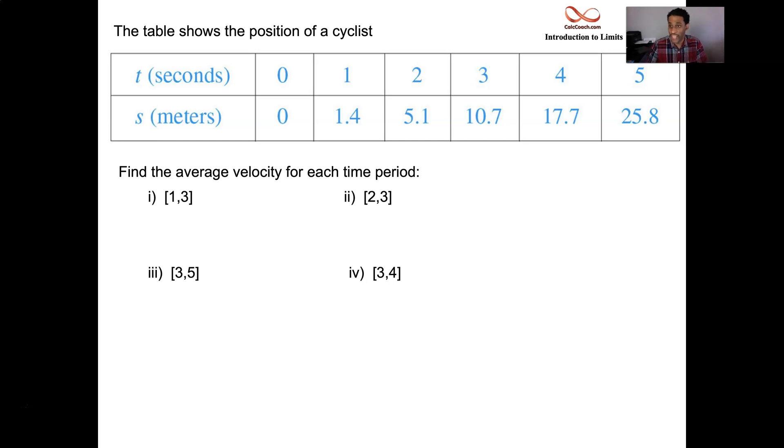Two seconds later, you've traveled 5.1 and so on. That's what the chart is. So we're going to look at the average velocity of the cyclist over these time intervals from one to three. It is just you subtracting y's in the numerator, subtracting x's in the denominator. Same thing, right? So 10.7 minus 1.4 is 9.3. And if you cut that in half, what you end up with is 4.65 units meters per second. Over that time interval, it was a two second interval, but over that time interval, you were traveling on average 4.65 meters per second.